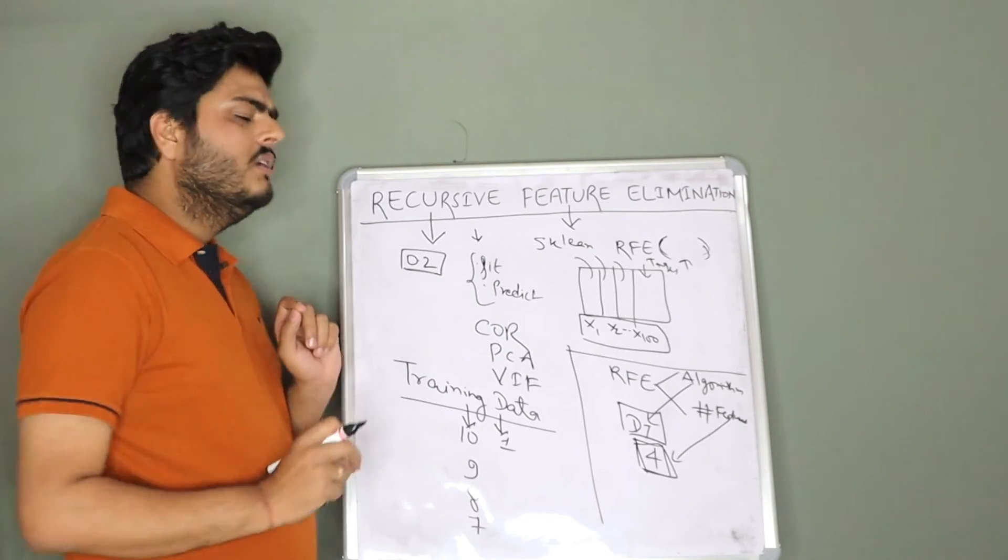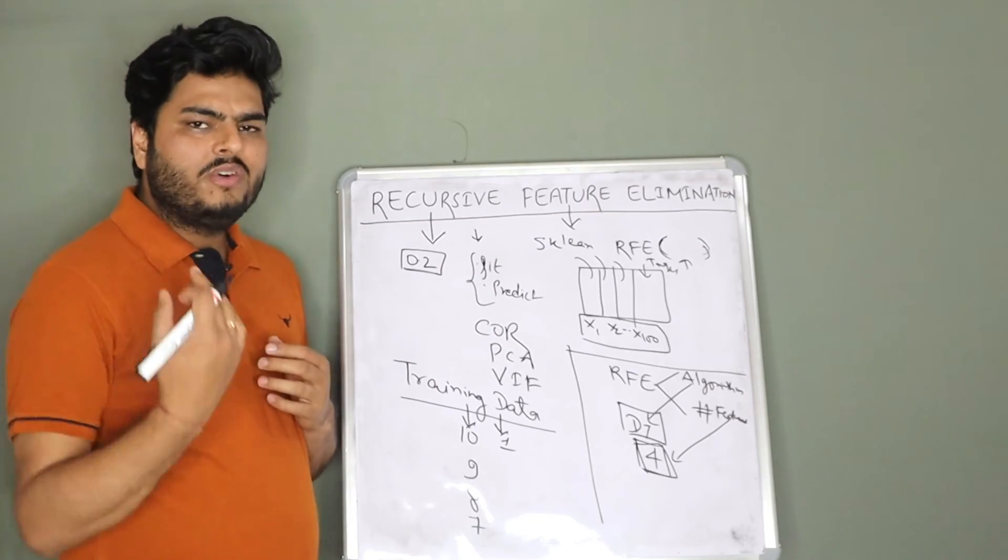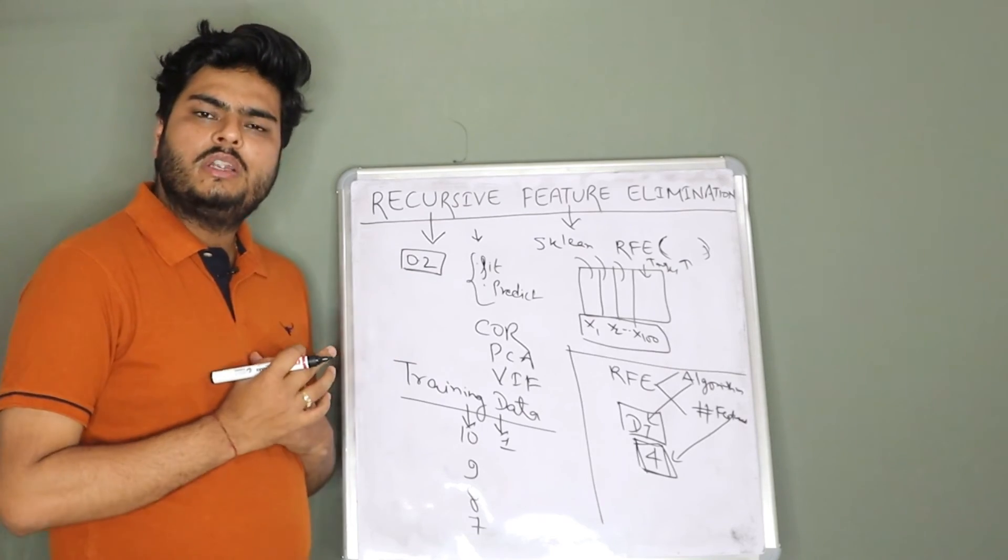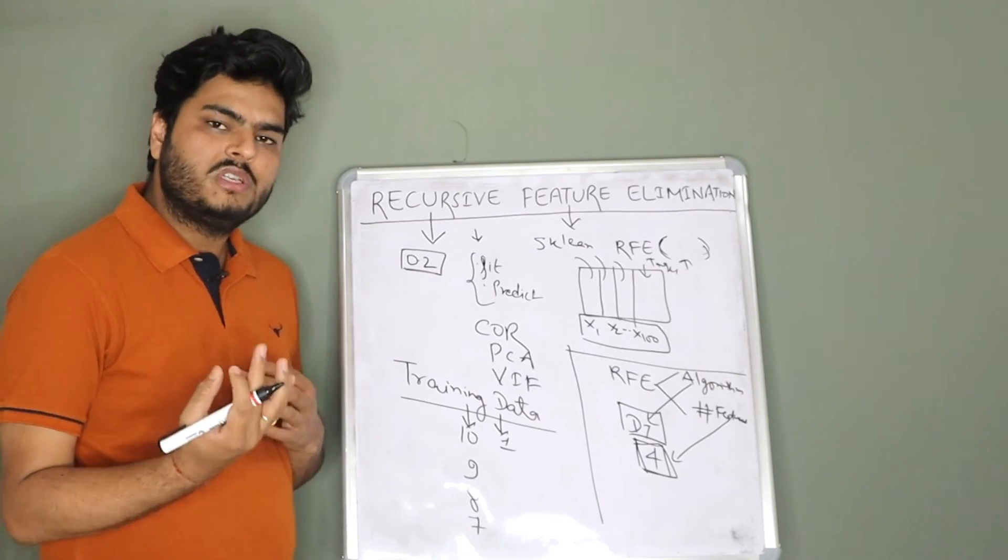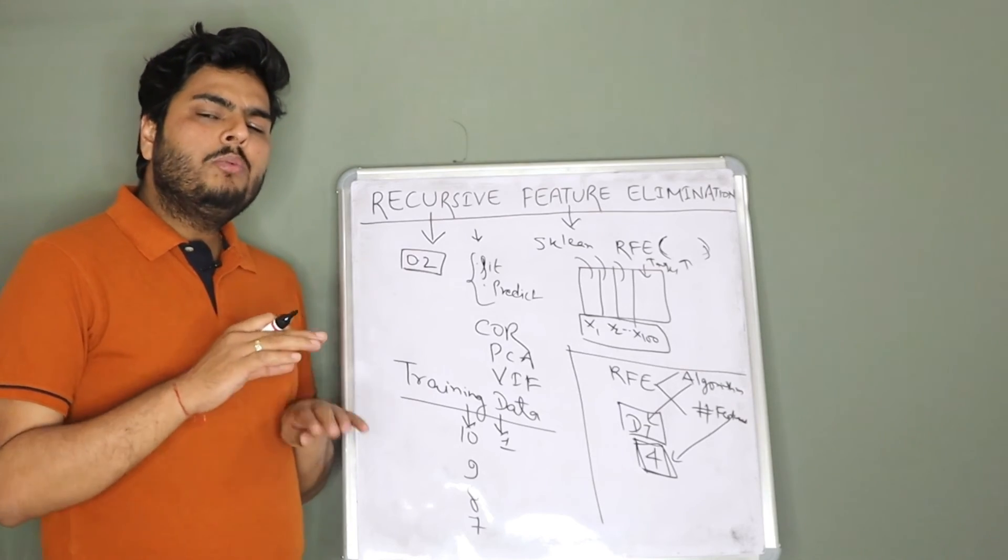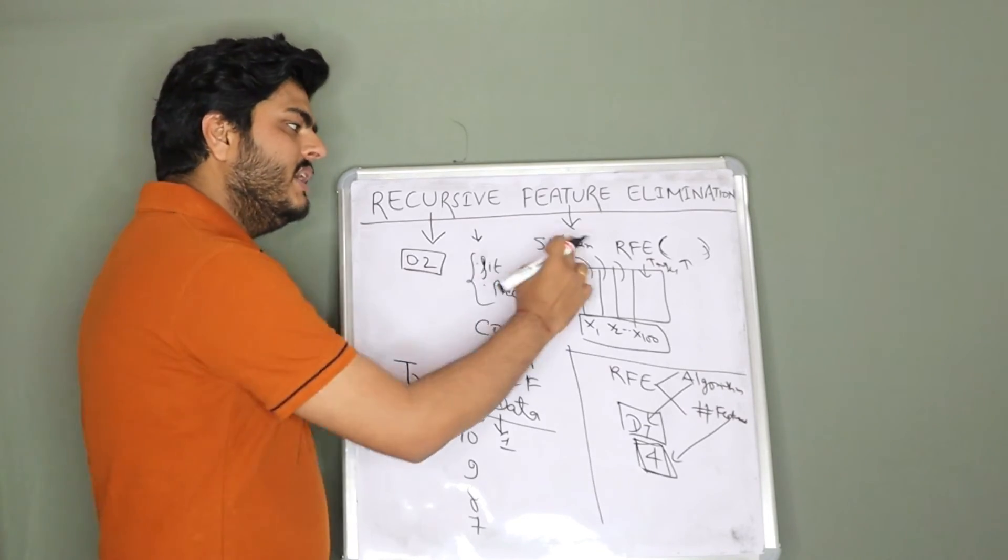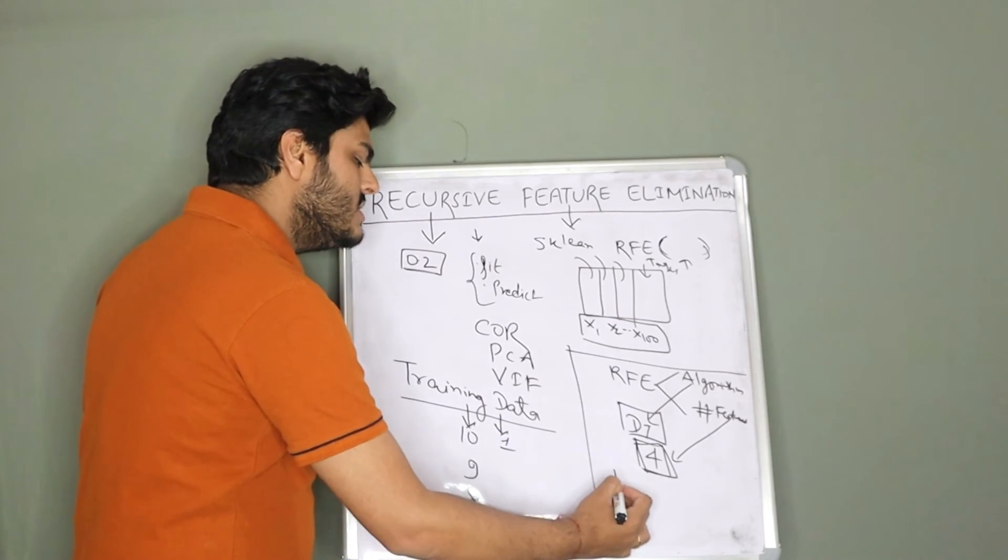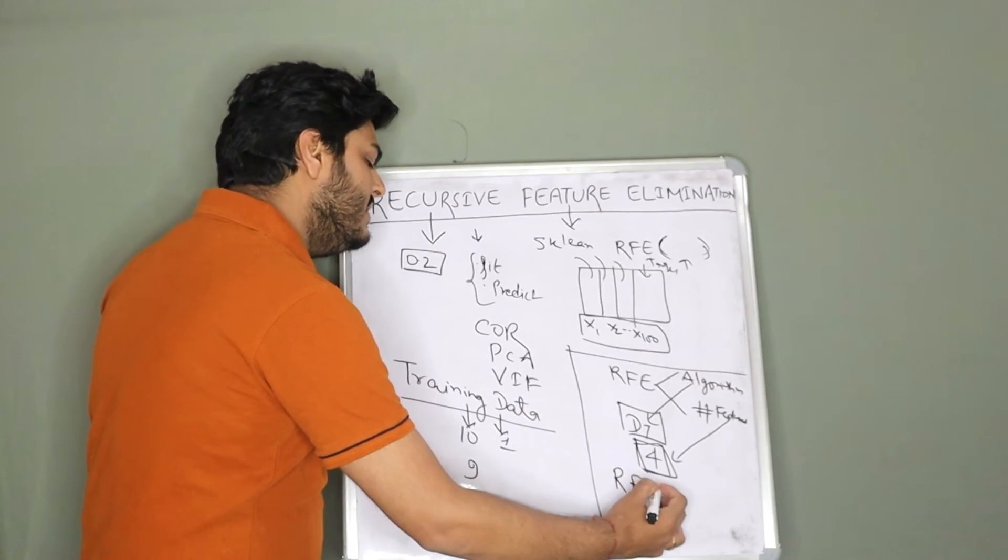But one thing here is, we always do not know in advance how many features we will need right. We cannot straight away say that we will need 4 features or 5 features or 6 features, we do not know. There is one more layer advancement on top of RFE known as RFE with cross-validation. That is known as RFE-CV.